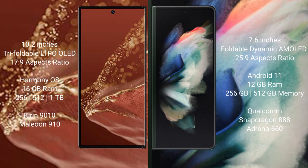The Wahabamate XT Ultimate comes with 16GB RAM and 256GB, 512GB, or 1TB internal storage, powered by the Kirin 9000 processor with GPU 910. The Samsung Galaxy Z Fold 3 comes with 12GB RAM and 256GB or 512GB internal storage, powered by the Qualcomm Snapdragon 888 processor with Adreno 660 GPU.